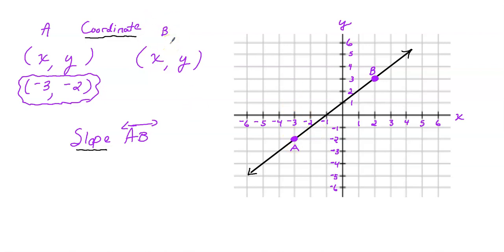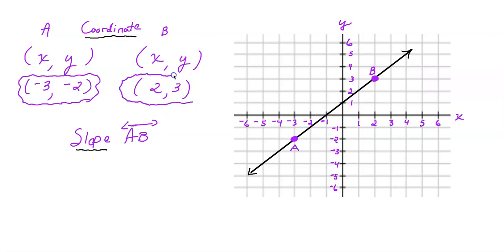Let's try B. What would the coordinate of B be? We start at the origin. How many units do I move horizontally in the x-direction? Two. Then how many units vertically in the y-direction? Three. So the coordinate of point B is two, three. I can't stress this enough — coordinates show direction horizontally and vertically.